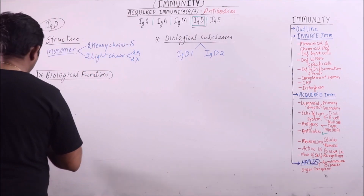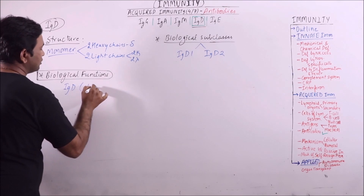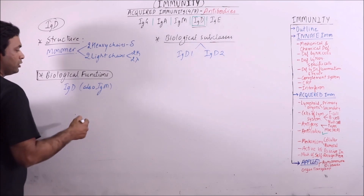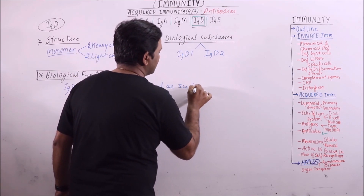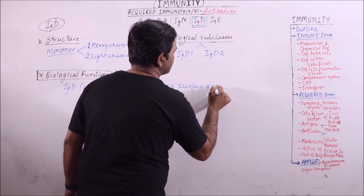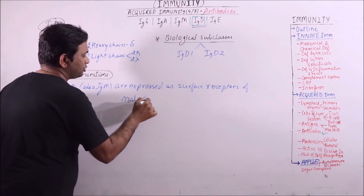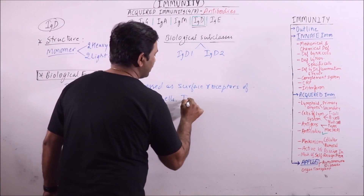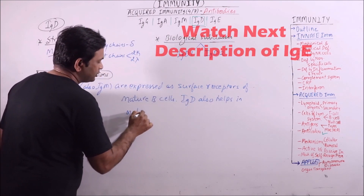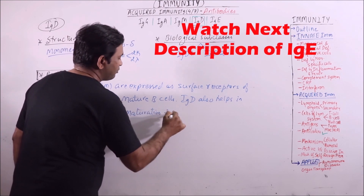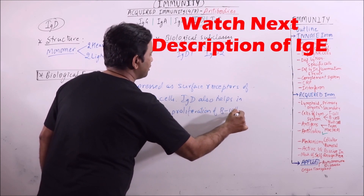The most important biological function of IgD is that the monomer units are expressed as surface receptors of mature B cells. IgD also helps in the maturation and proliferation of B cells.